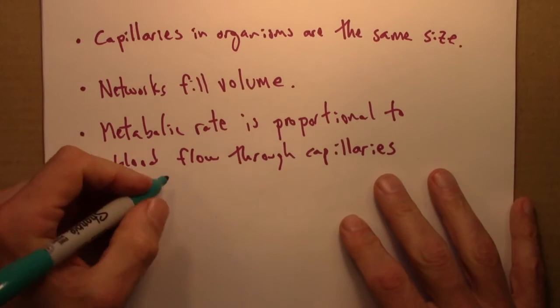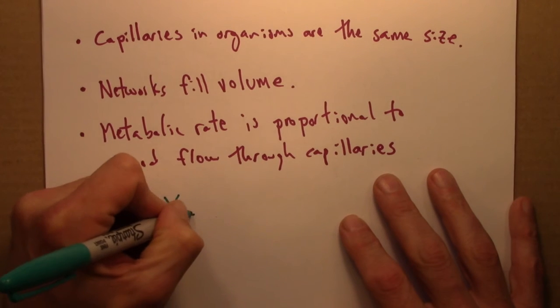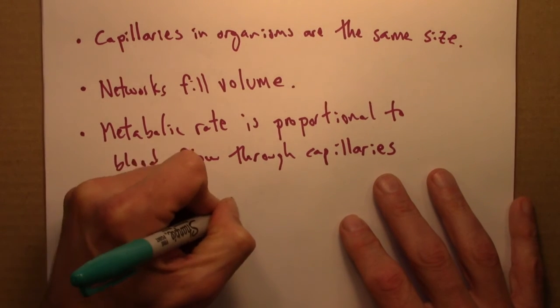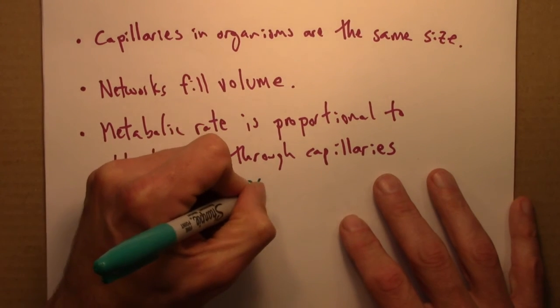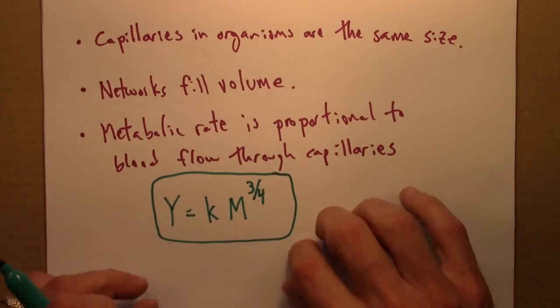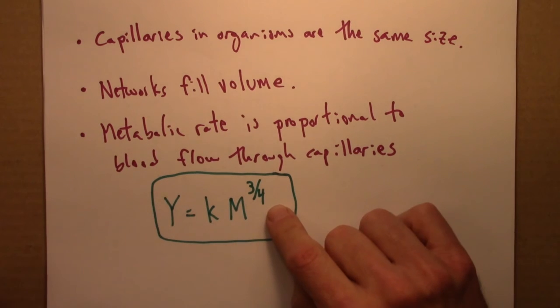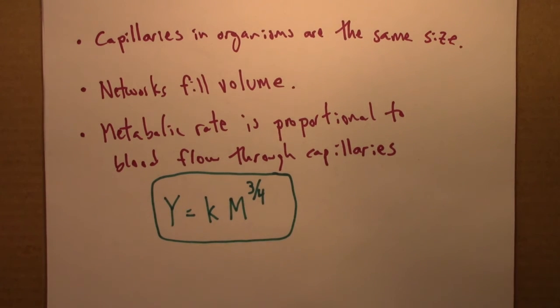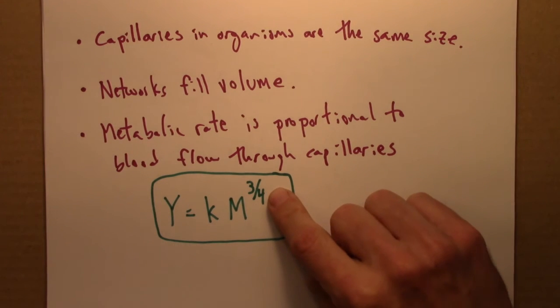one ends up with the metabolic scaling result, which is the metabolic rate y is proportional to mass to the three quarters power. So this provides an explanation, a mechanistic explanation for why we see three quarters in this exponent and not two thirds.